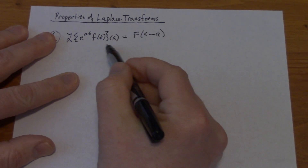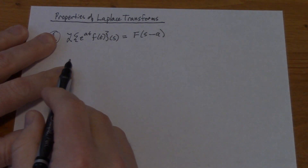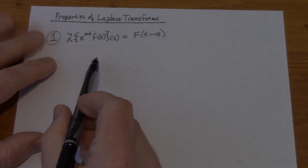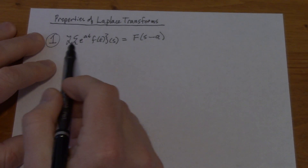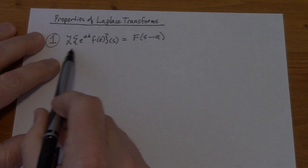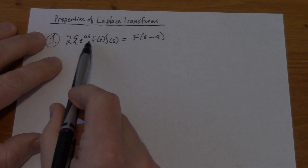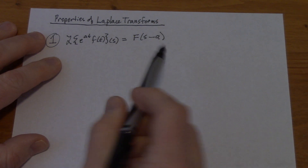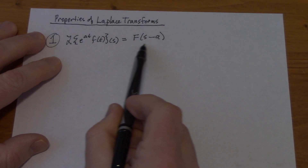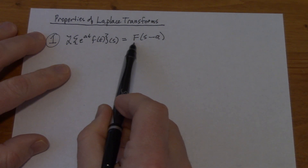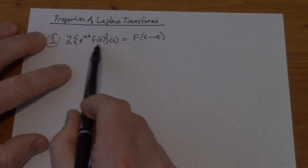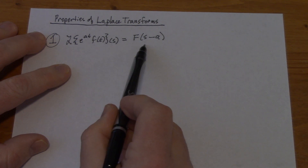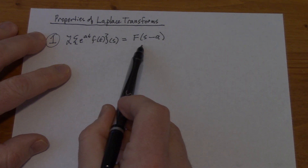Alright class, in this video we're going to talk about a couple of Laplace transform properties. The first one is that the Laplace transform of e to the at times f of t is just F of s minus a. So what does this mean? This means you find the Laplace transform of f and then you substitute s minus a into it.